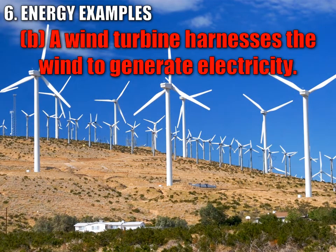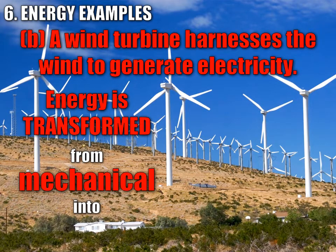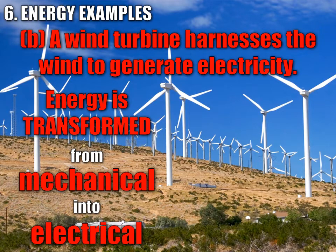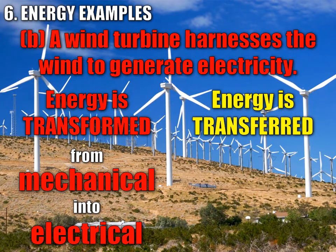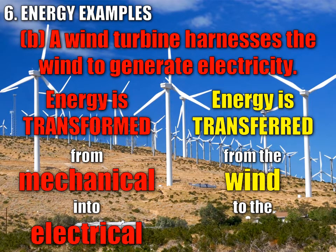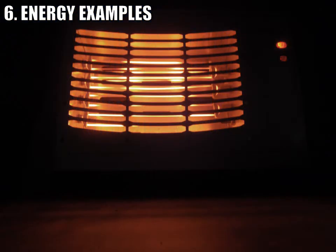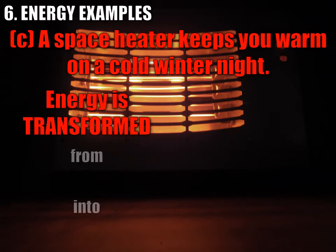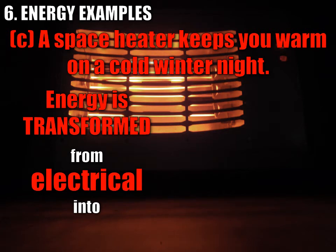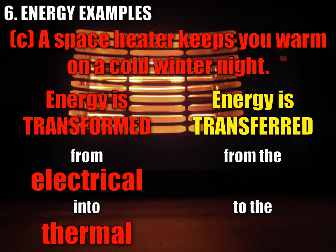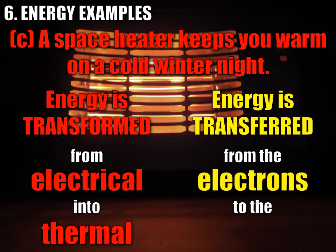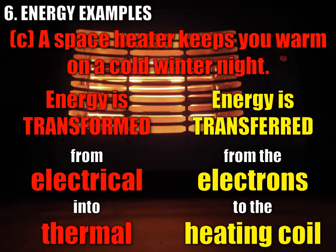A wind turbine harnesses the wind to generate electricity. There's a transformation of energy from mechanical energy into electrical energy — the blades of the turbine are spinning, that's mechanical energy, and the turbine transforms it into electrical energy. There's also a transfer of energy from the wind to the electrons. A space heater keeps you warm on a cold winter night: energy is transformed from electrical — you plug the heater into the wall — into thermal, the heater gets hot. The electrical energy originates in the electrons, which give their energy to the heating coil.